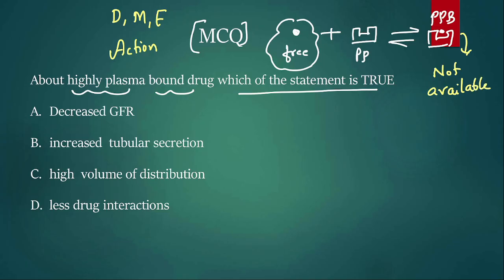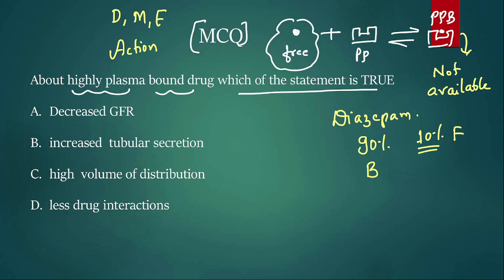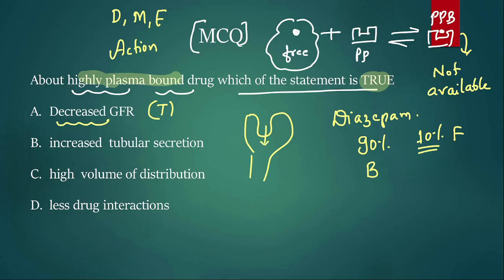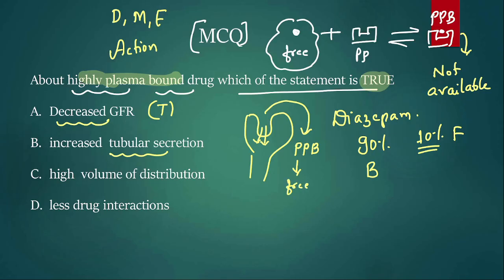For example, diazepam is highly plasma protein-bound — about 90% is bound and only 10% is free. So only 10% is pharmacologically active. Option A states it decreases GFR — this is true, because a plasma protein-bound drug is large in size and cannot be filtered at the glomerulus, resulting in less clearance and decreased GFR. Option B states it increases tubular secretion — this is not significantly affected, because drugs that escape filtration can still become free at the peritubular capillaries and be secreted.